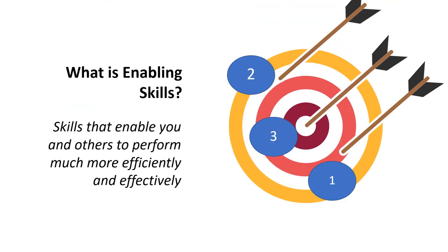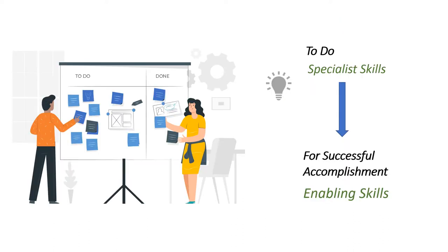Dear friends, look at the above illustration and reflect on what is meant by enabling skills. Enabling skills are skills that enable us to perform much more efficiently and effectively. For completing a task related to any profession, we need job or domain-related skills. And for successful accomplishment, we need enabling skills. All have specialist knowledge and experience that define their job, but we also need enabling skills to communicate effectively, collaborate, and cooperate to achieve goals.